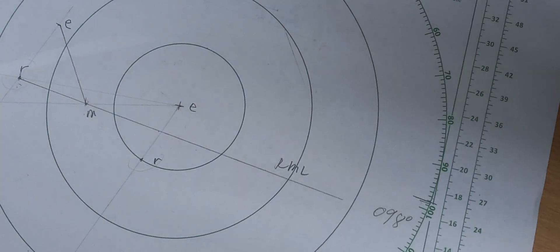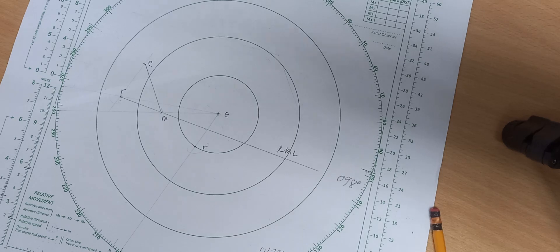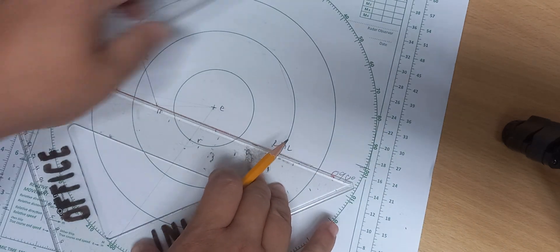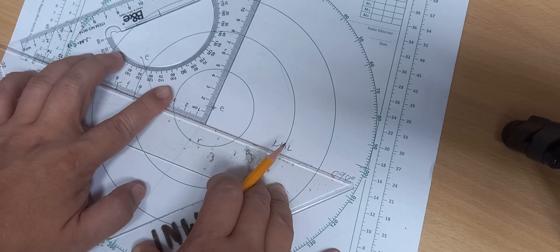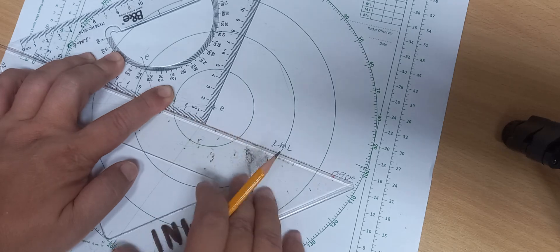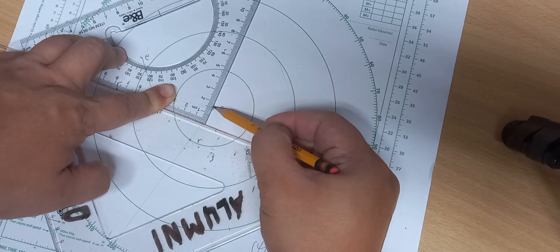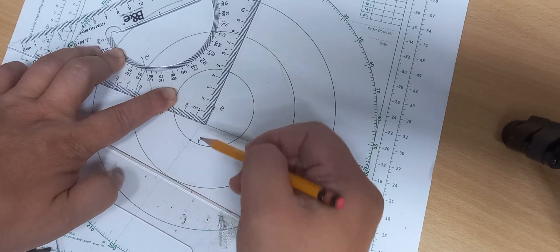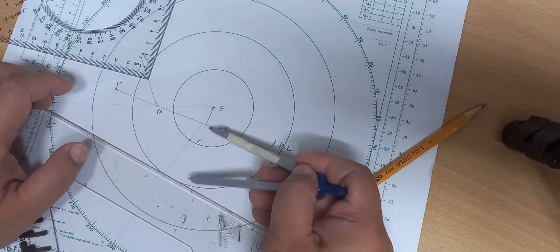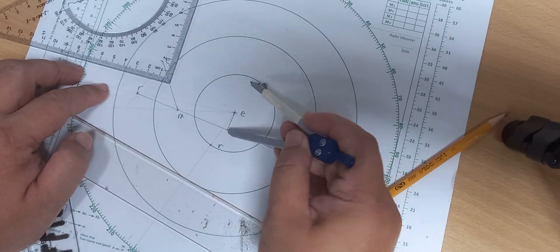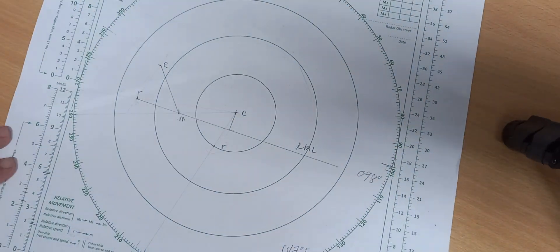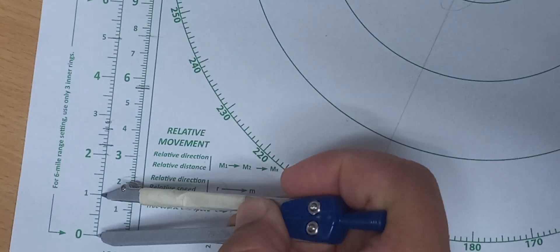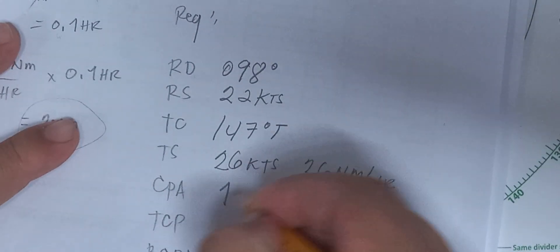Let's go to the CPA. For the CPA, the RML should be perpendicular to point E. To get that, you need another triangle pointing perpendicular to point E — the right angle is here. This is the RML, and this is letter E. To get the perpendicular, point a right angle to point E, then make a line. So that is the CPA. You need to measure it using the 8-mile range — remember that. Until we finish, we are using 8-mile range. So it is 1 nautical mile — your CPA is 1 nautical mile.